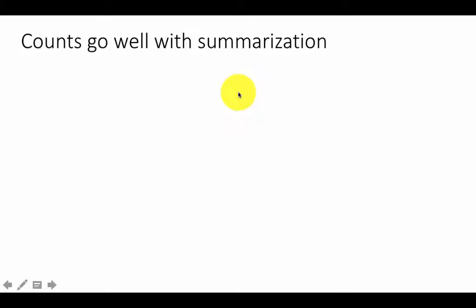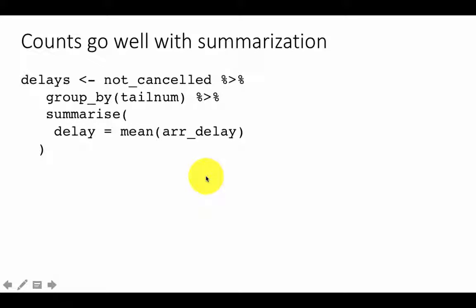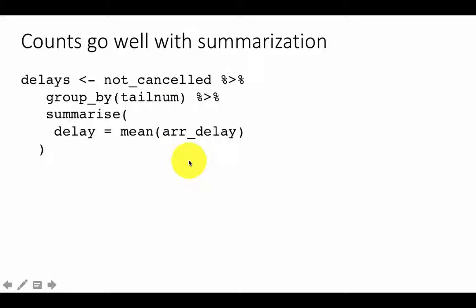Counts usually work very well with summarization, as this next example illustrates. We are considering not-cancelled flights and grouping them by tail number — a unique identifier for each individual aircraft — and then summarizing the mean delay. Essentially, we are grouping by individual planes and looking at whether specific aircraft tend to have more delays.